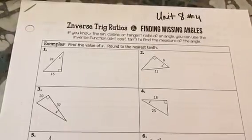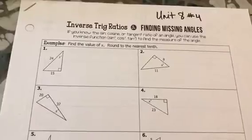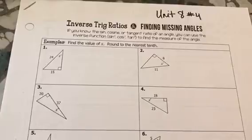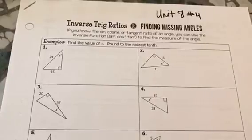This lesson is about finding the angle. Formerly, what we were doing was we were using the sine, the cosine, and the tangent to find the missing leg or possibly the missing hypotenuse of a triangle.